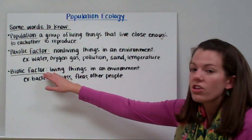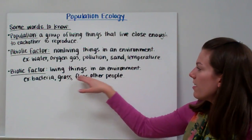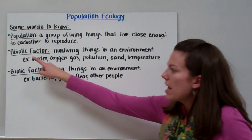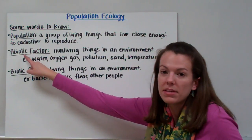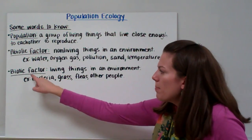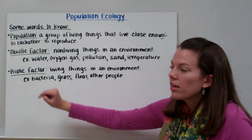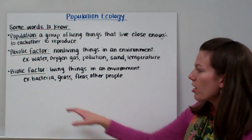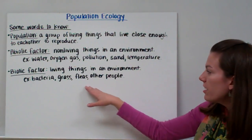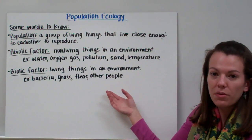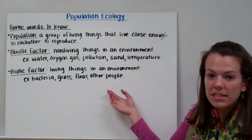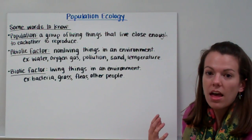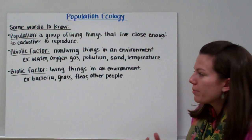Biotic factors are living things in an environment. Remember, if we put an A in front, that means non-living, but biotic alone means living. Some examples of biotic factors are bacteria, grass, fleas, and other people. Anything that's alive is considered a biotic factor.